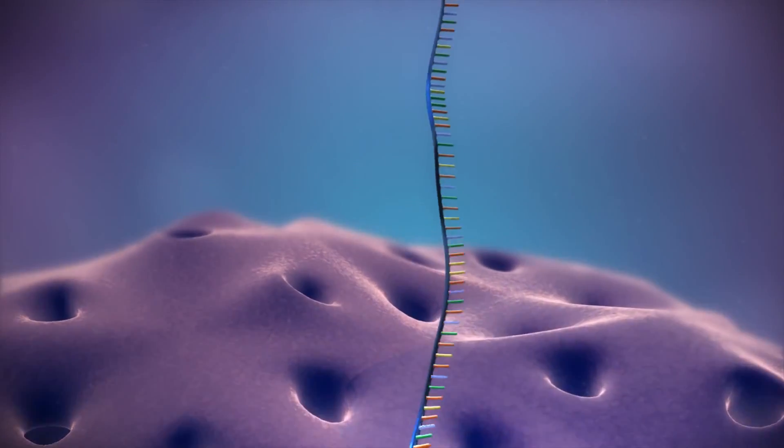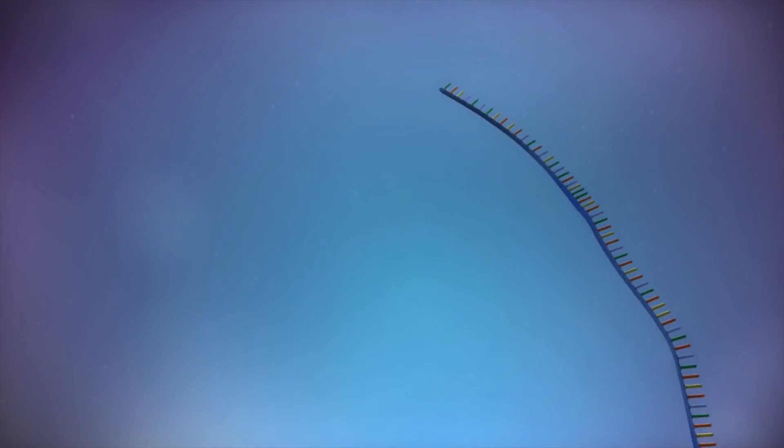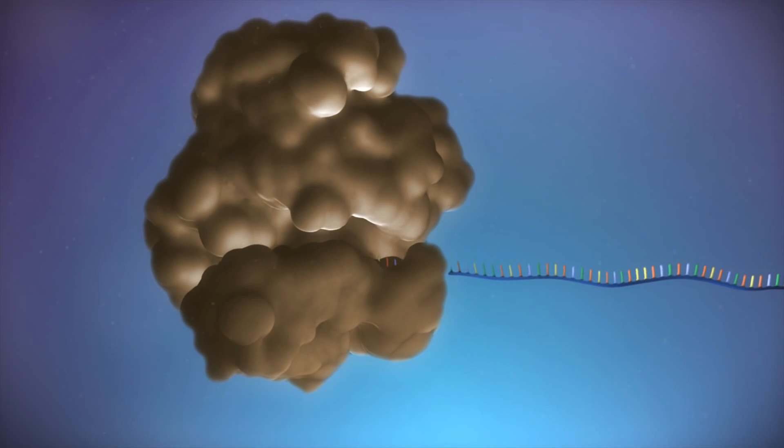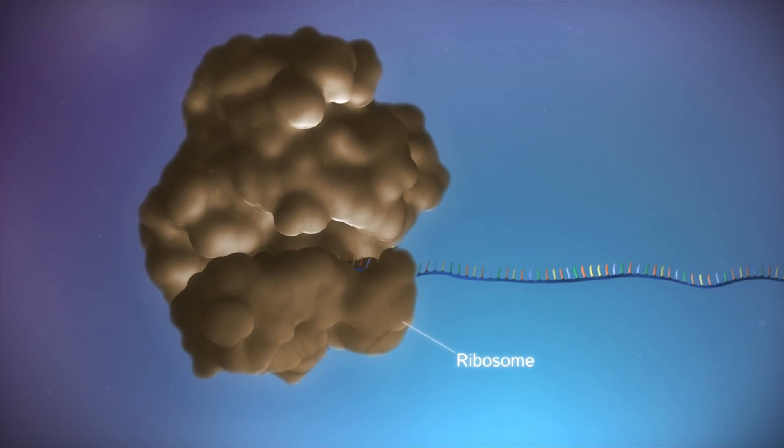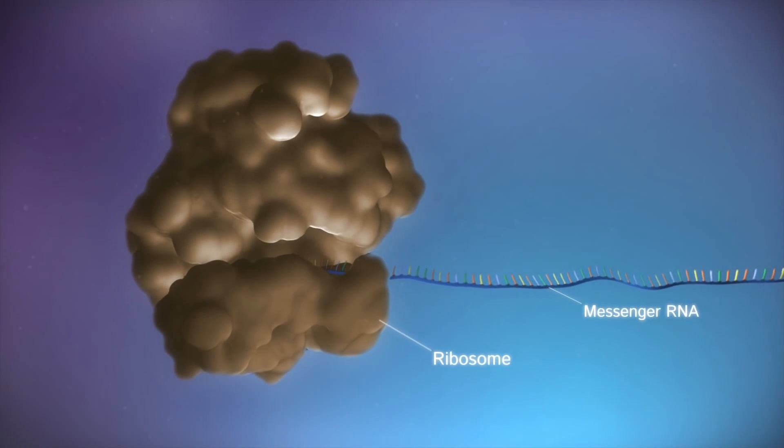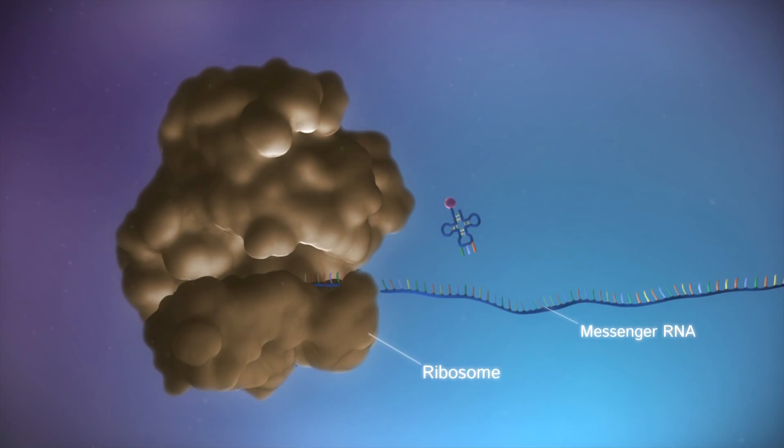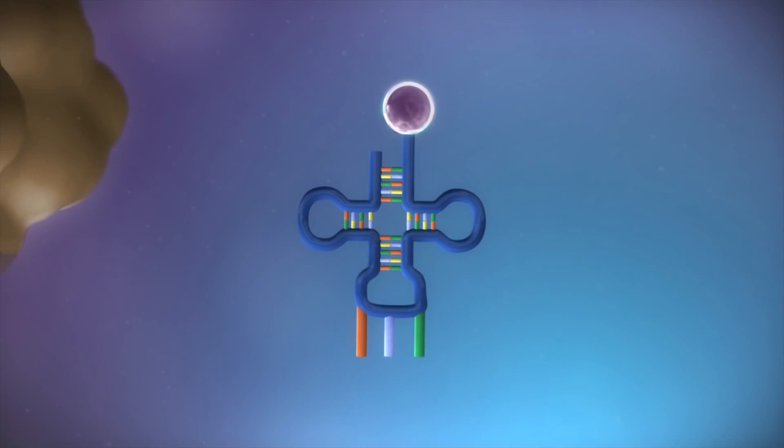Into the cytoplasm. Protein factories in the cytoplasm, called ribosomes, bind to the messenger RNA. The ribosome reads the code in the messenger RNA to produce a chain made up of amino acids.